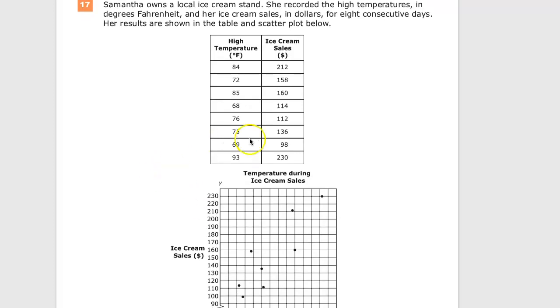These temperatures are everywhere. 69 degrees all the way up to 93. There's a 68 in here. It's kind of everywhere, but lots of 70s.